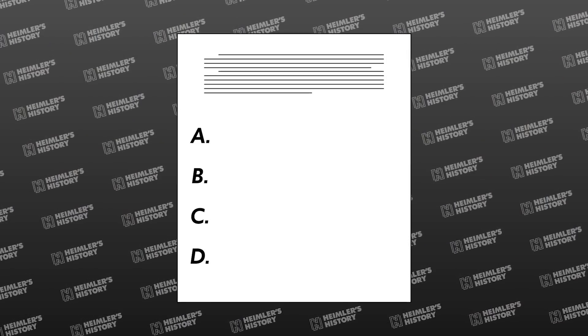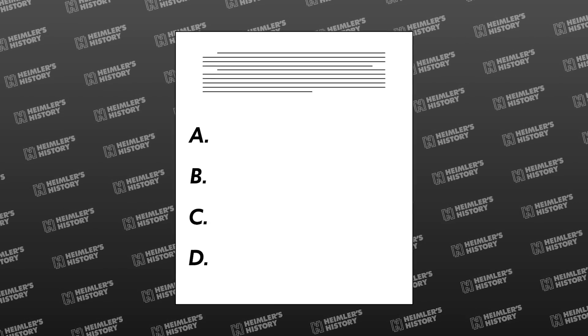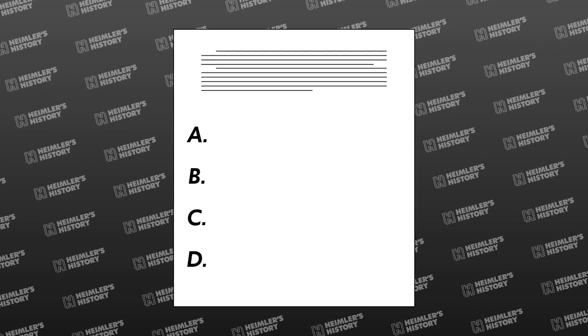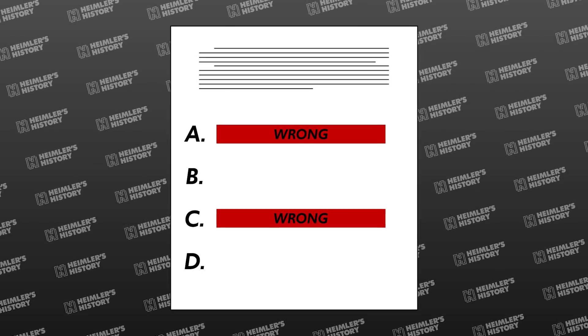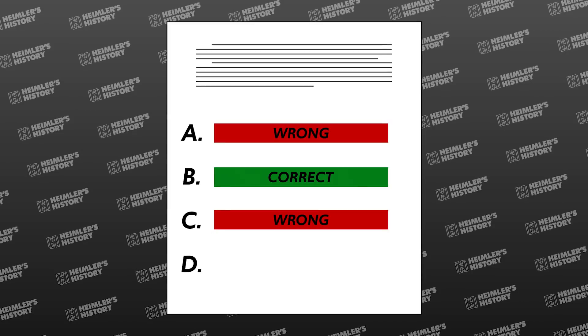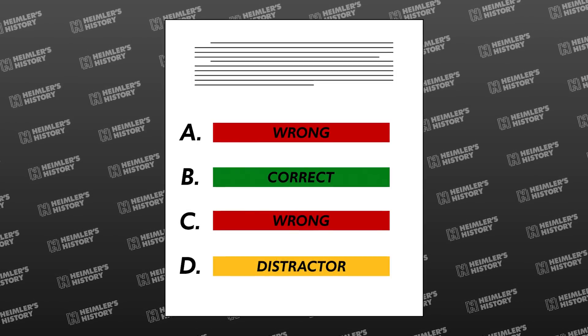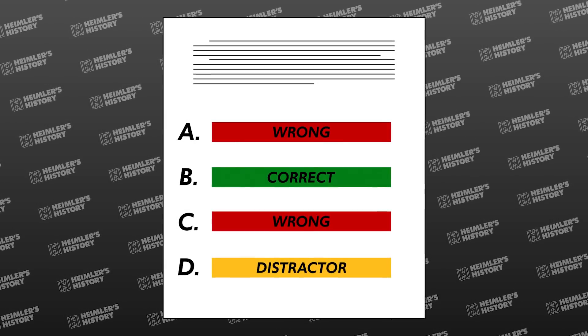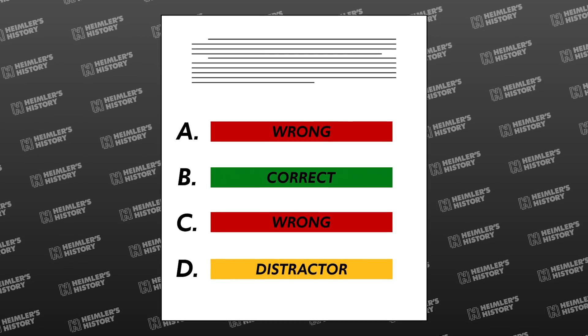It helps here to know how these questions are written. Every multiple choice question on your exam is going to have four answers for you to choose from. And the writers of these questions have a formula that they follow. Two questions are obviously wrong, and if you know your material, you're going to know that they are wrong. Then there's the right answer, and then they include what's called a distractor, which sounds like an evil plot from the college board overlords designed to make you fail, but it's really just a way to separate those who really know their stuff from those who only kind of know it. The distractor looks kind of right, but in the context of the question, it will be wrong.